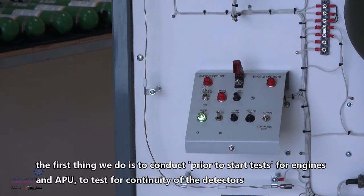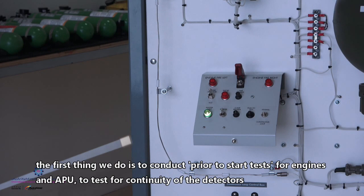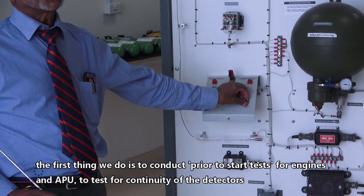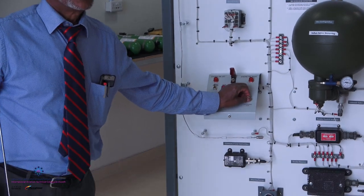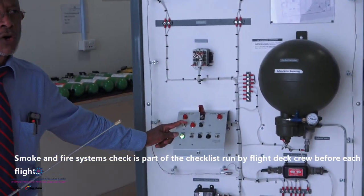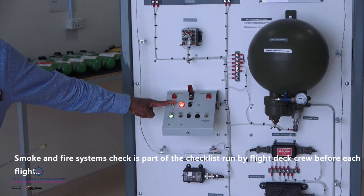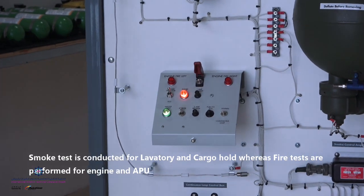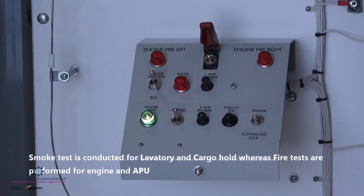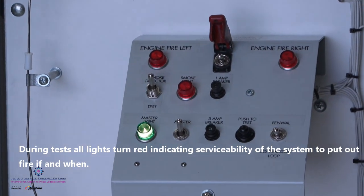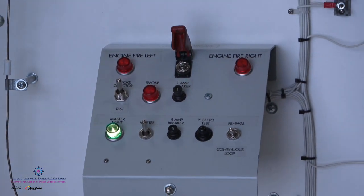The first thing we do before we start the engine and APU is we do a test. We test for the continuity of the detectors to make sure they are still serviceable. We also test the smoke. This is the test of the smoke - all lights will go red, and then after a while, in 20 seconds or so, they will turn off. This means your system is good.